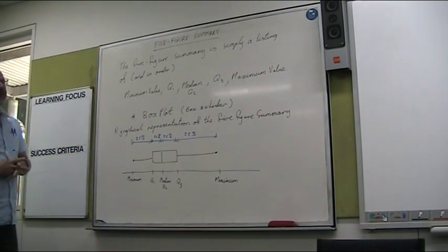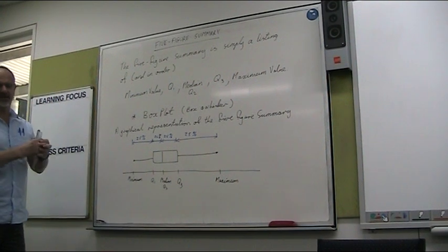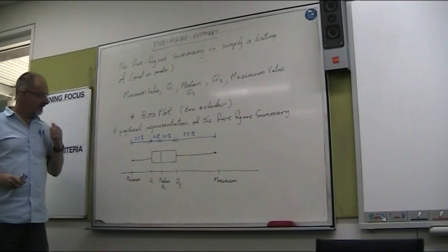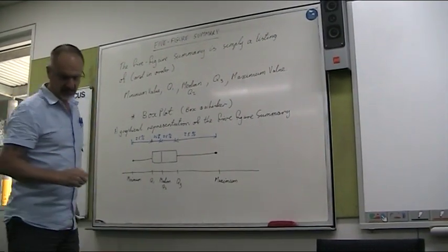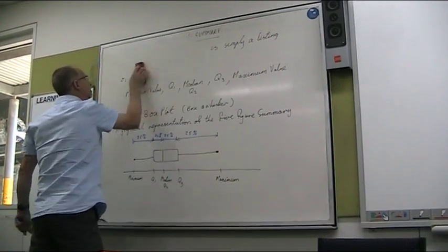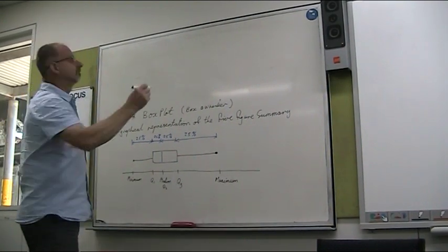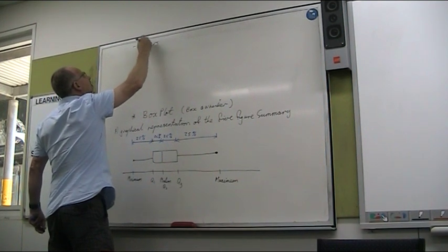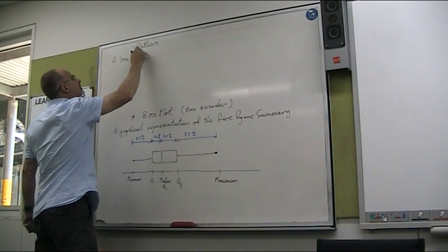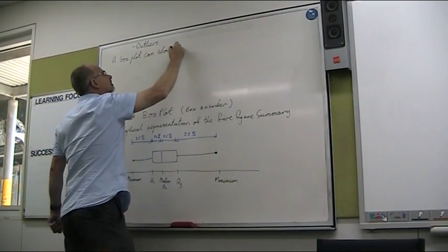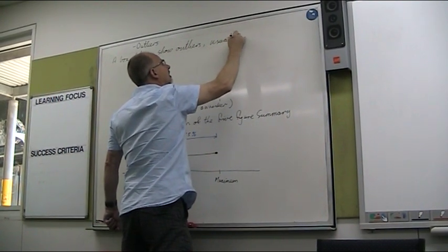Alright. So what we can also do on our box plot is we can put outliers. And as we've already discussed, outliers are things that are removed from the main part of the data. And so if we had an outlier, our outlier would be perhaps represented as a dot. So we're going to have a look at the diagram there. So, outliers. Let's see how the box plot can show them.